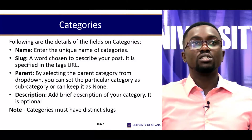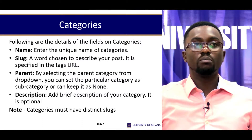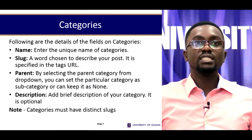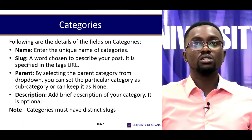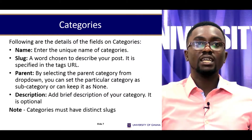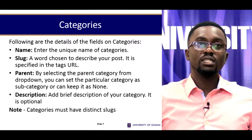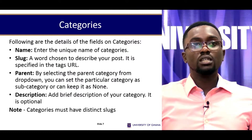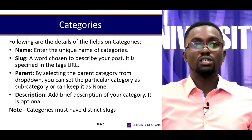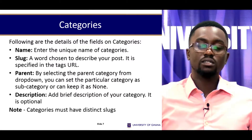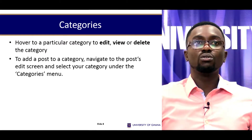The following are the details of the fields of the category. The name is the unique name you give to your category. You choose a slug — a word chosen to describe your post; it is specified in the tag's URL. For the parent, by selecting the parent category from the drop-down list, you can set a particular category as a subcategory or keep it as none. The description allows you to add a brief description of your category, and this is optional. Note that categories must have distinct slugs. Hover over a particular category to edit, view, or delete it.